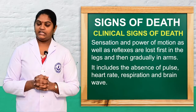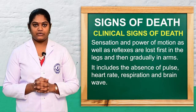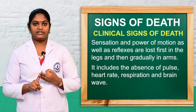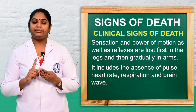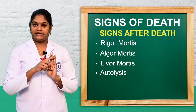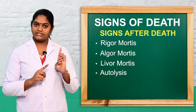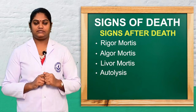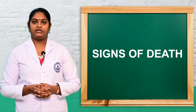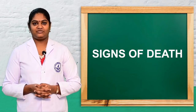Today we discussed the signs of death. The clinical signs are absence of pulse, respiration, heart rate, and absence of brain waves. After death, the four main signs are rigor mortis, livor mortis, algor mortis, and autolysis. Hope you all understood the signs of death. Thank you for watching this video — we will meet in the next video.